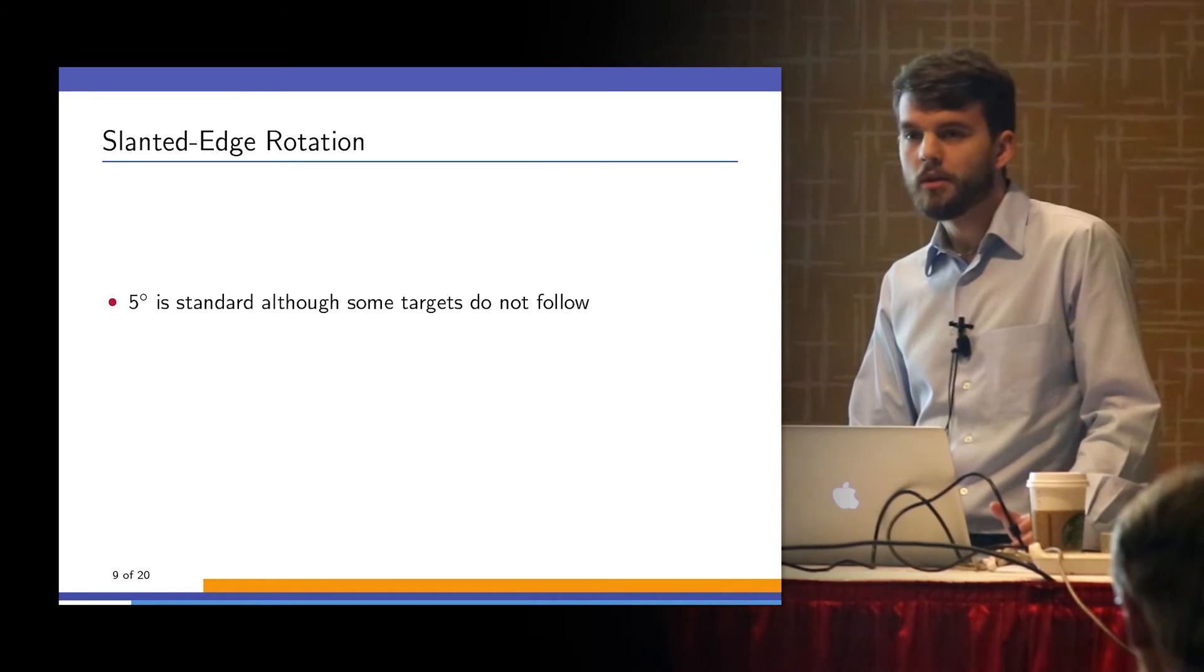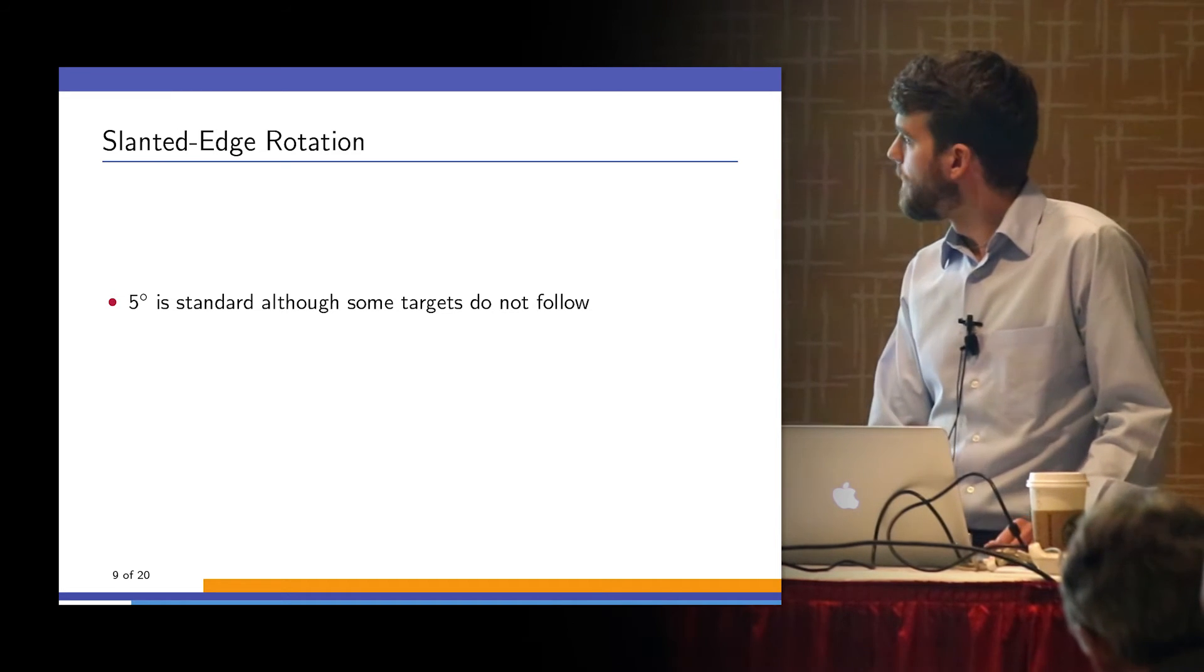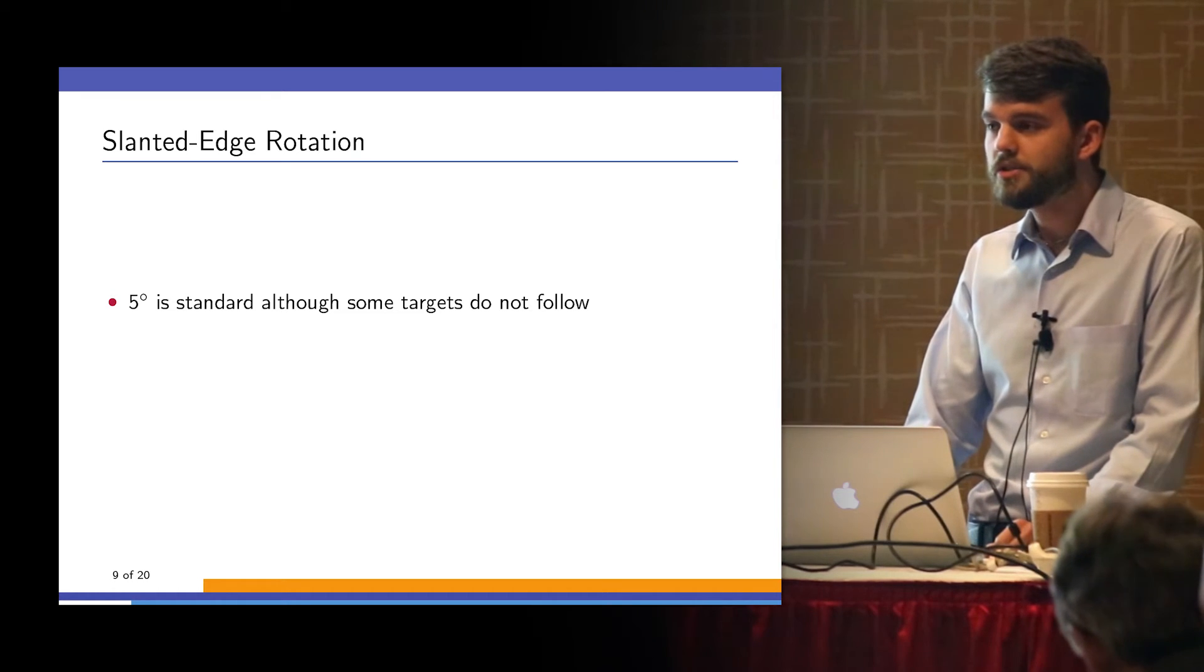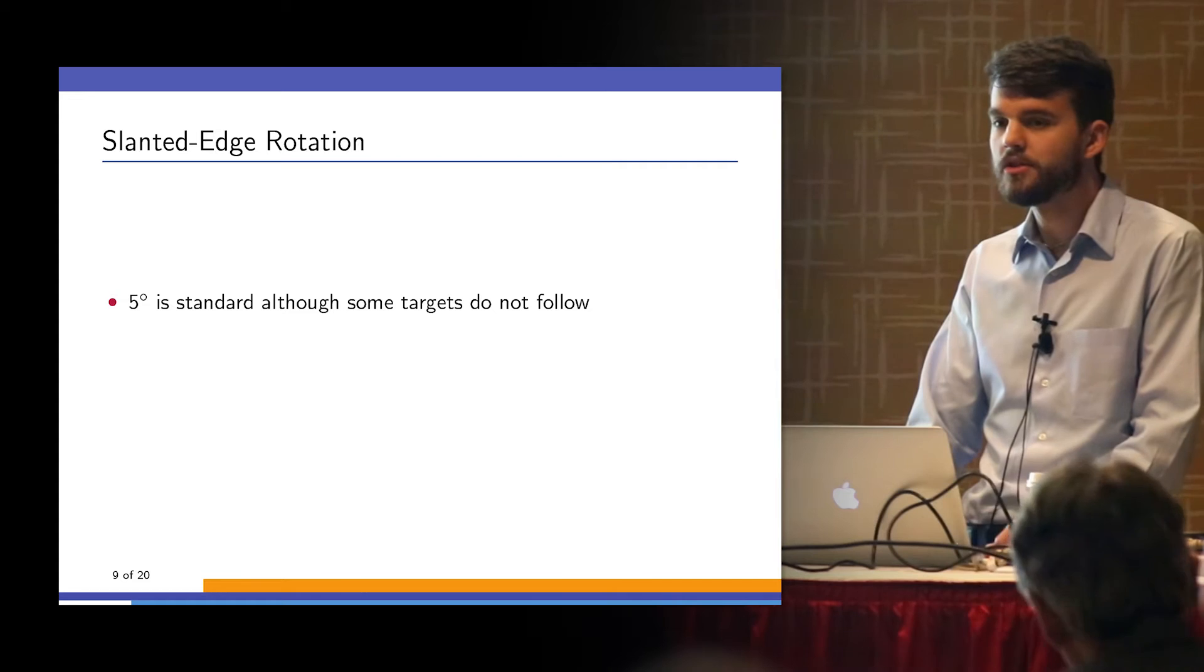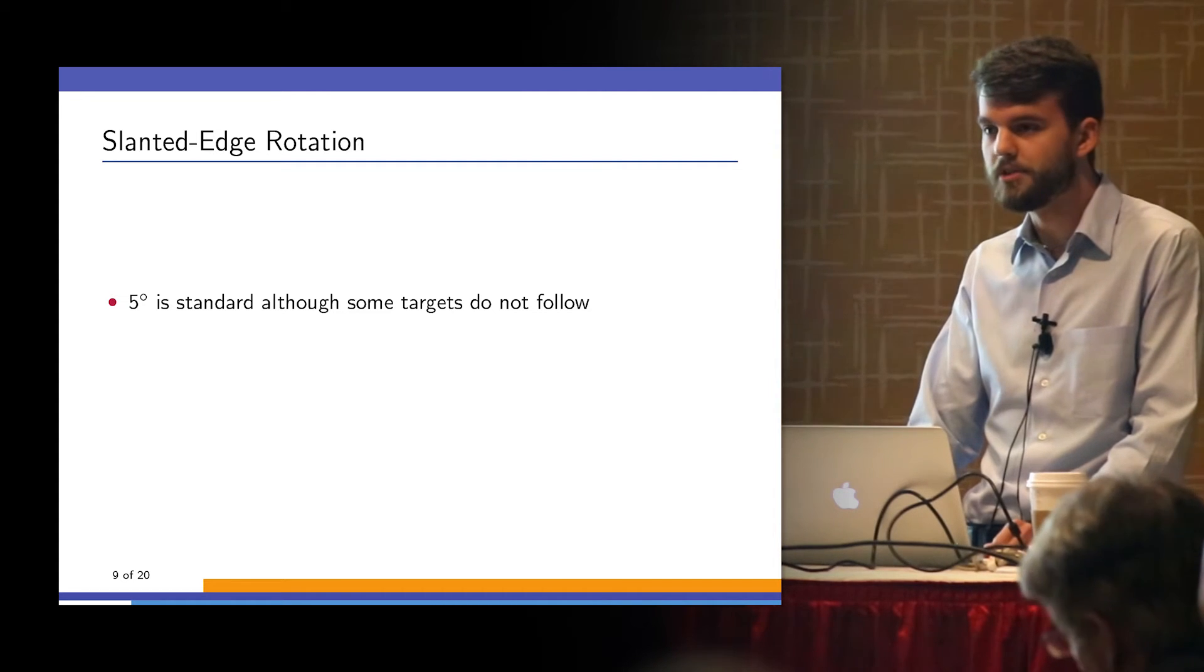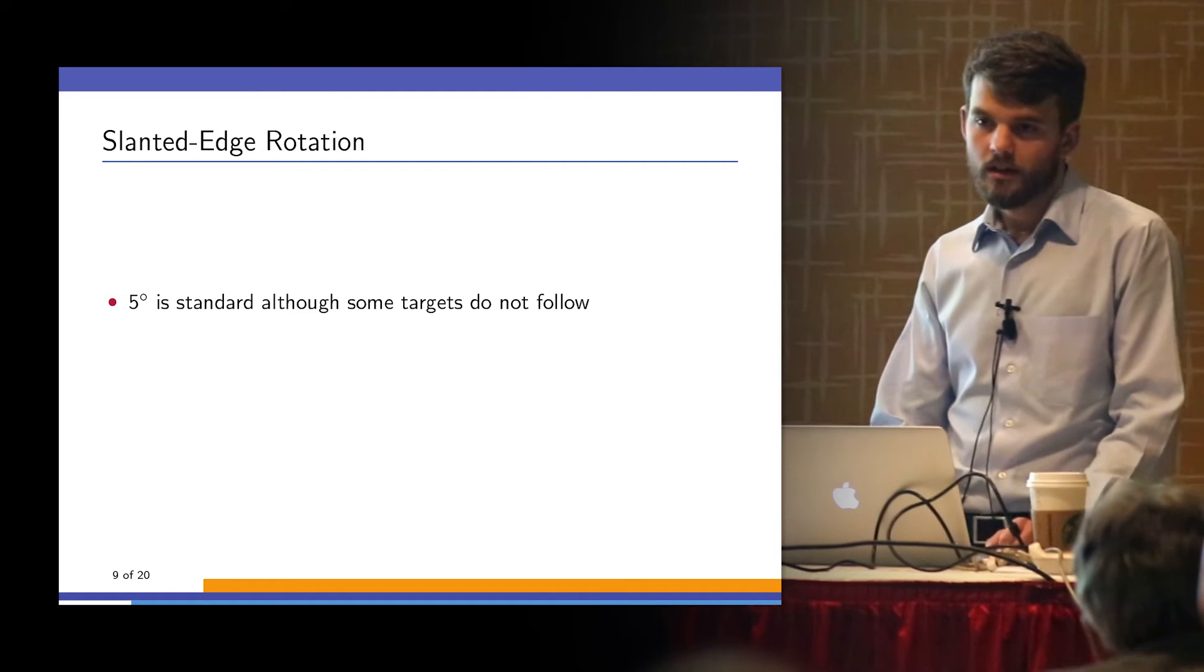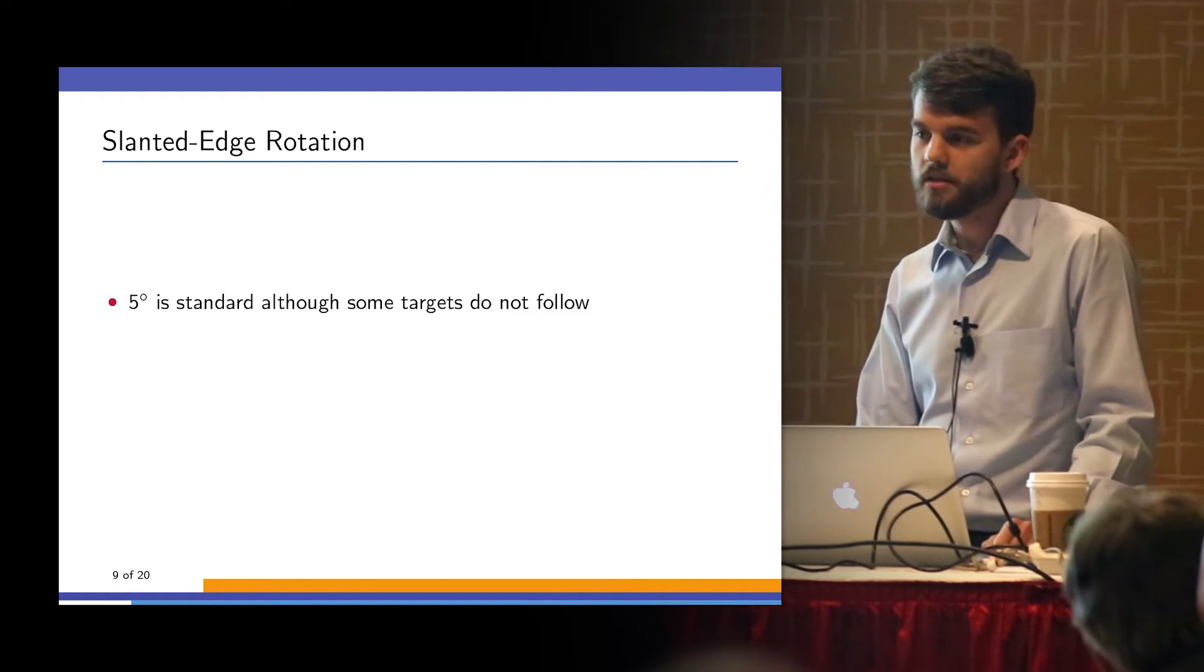It appears in all the standards. Everyone kind of, if you ask someone about it, most people here would say five degrees is normal. There are some targets that don't follow this though. The new CPIQ standard that's being developed has a target that has sagittal and tangential edges at many different field positions, with angles ranging from five degrees to 42 degrees.